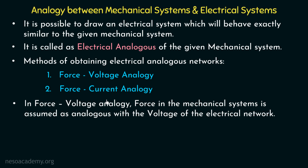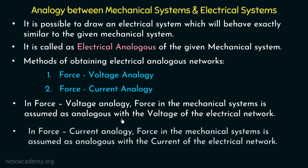In case of force voltage analogy, the force in mechanical systems is assumed as analogous with the voltage of the electrical network. So if we assume the voltage of the electrical network to be analogous with the force of the mechanical system and accordingly derive the other analogous terms, we can draw the electrical analogous network. In force current analogy, the force in mechanical systems is assumed as analogous with the current of the electrical network, and if we derive the other terms accordingly, we can draw the electrical analogous network to the given mechanical system.